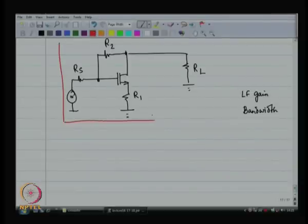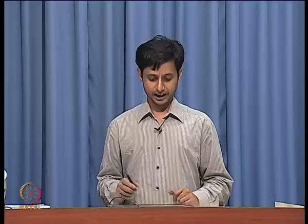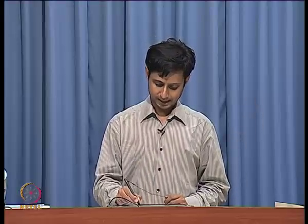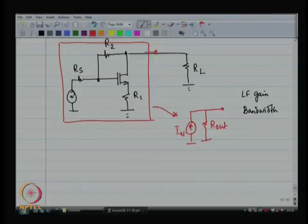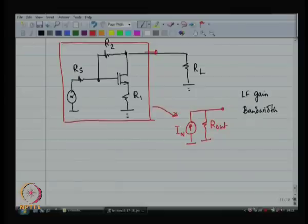I know how to use open circuit time constants. Now let me try to find out the low frequency gain. How do you find out the gain of a circuit? You use the Norton equivalent model. You want to model your circuit as a current source in shunt with an output resistance. If I can model this as a Norton current source and an output resistance, then I can find out the gain very easily. The gain is: output voltage equals I_n times R_out in parallel with R_L.